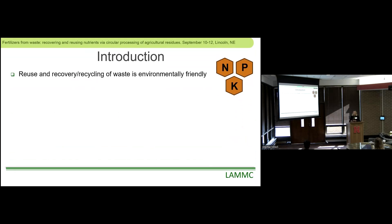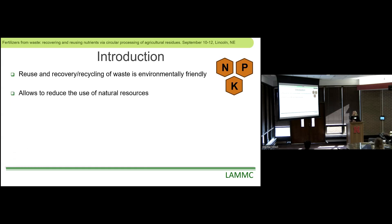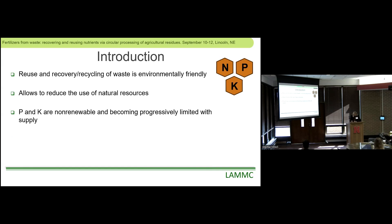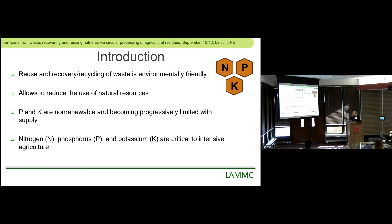Sustainable handling of industrial solid waste is important because it can be environmentally friendly — finding ways to minimize harmful substances for humans or the environment, and it allows reducing the use of natural resources. Phosphorus is especially crucial today. Phosphorus and potassium are sourced from mineral deposits, they are non-renewable, and their supply is becoming progressively limited. But waste is rich in nitrogen, phosphorus, and potassium, which can be used in agriculture.